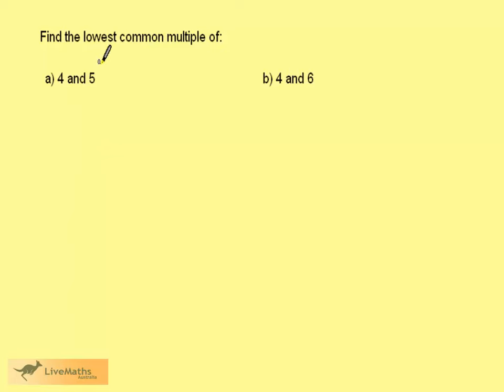We want to find the lowest common multiple of 4 and 5. A good technique for doing this is to start writing down the times table for the smaller number. I usually write down the first 5 to begin with.